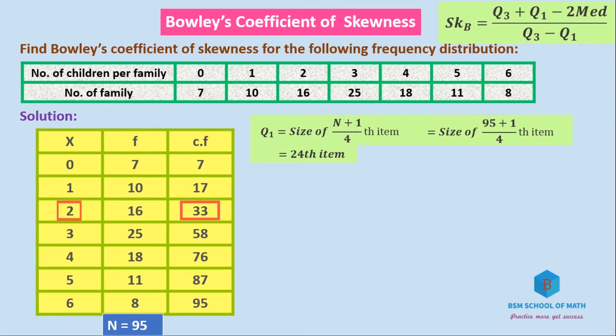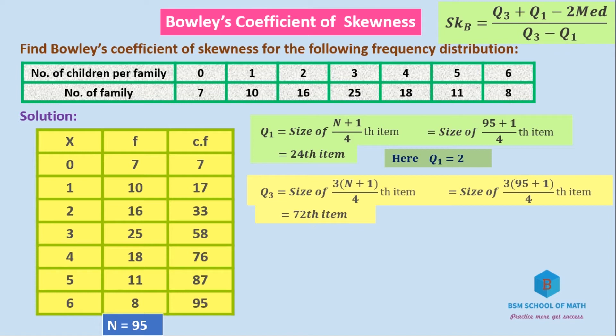Q3 is the size of 3(N+1)/4 th item. So 3(95+1)/4 equals 3(96)/4 which is 72. The 72nd item or above is 76, and the corresponding value is 4, so Q3 equals 4.